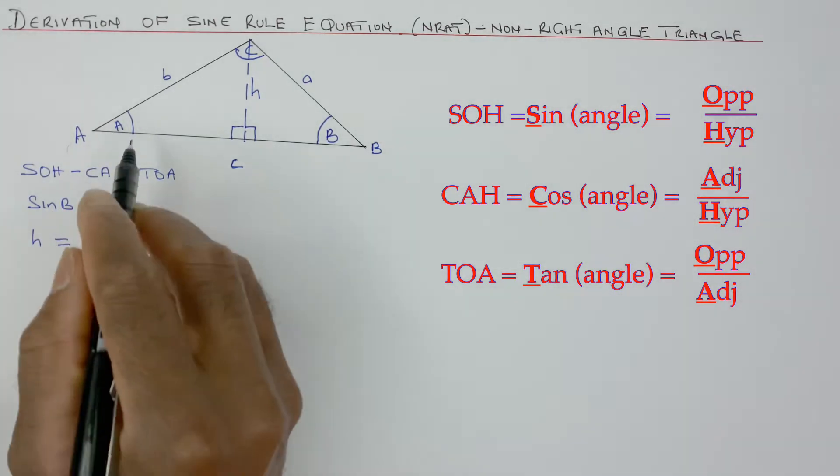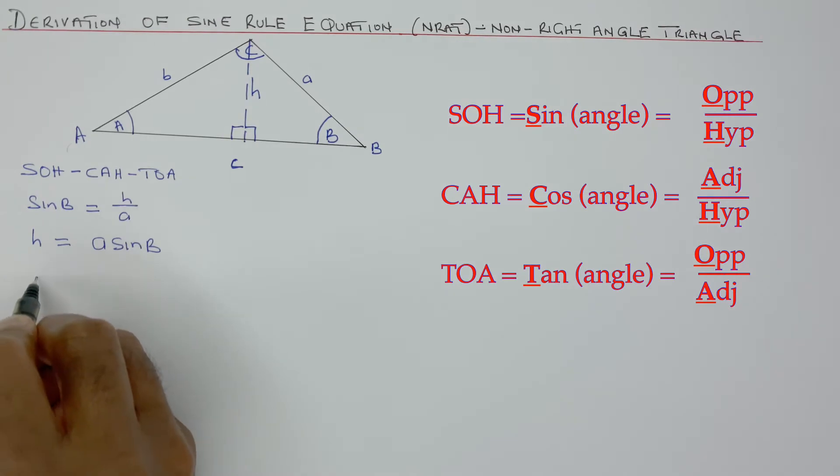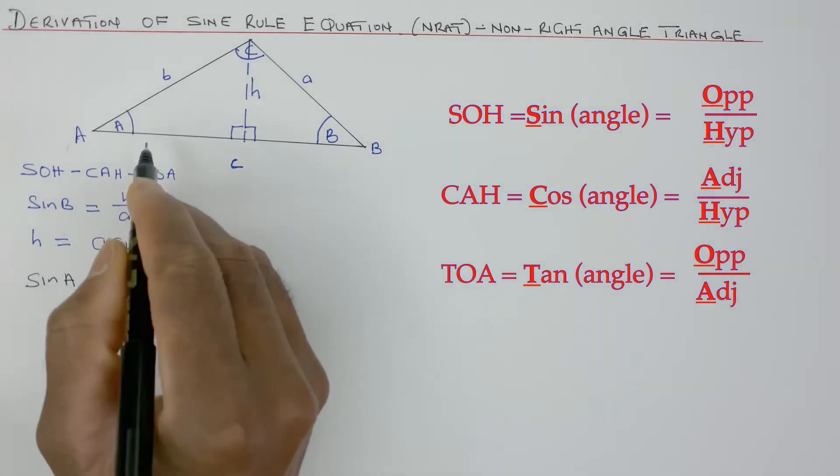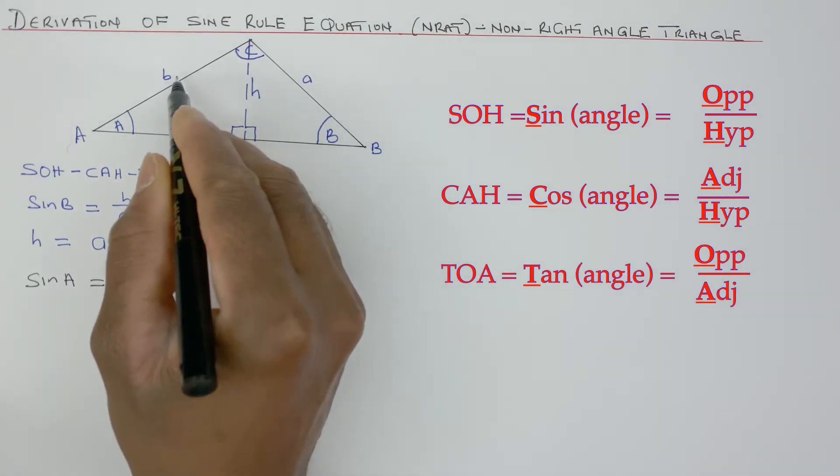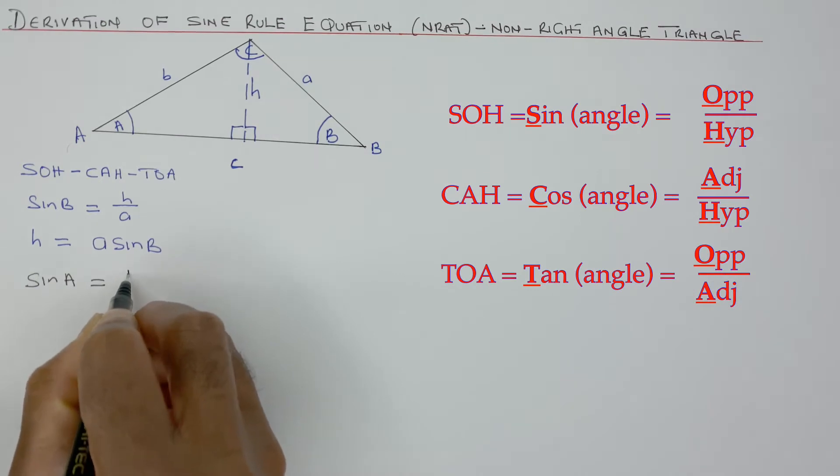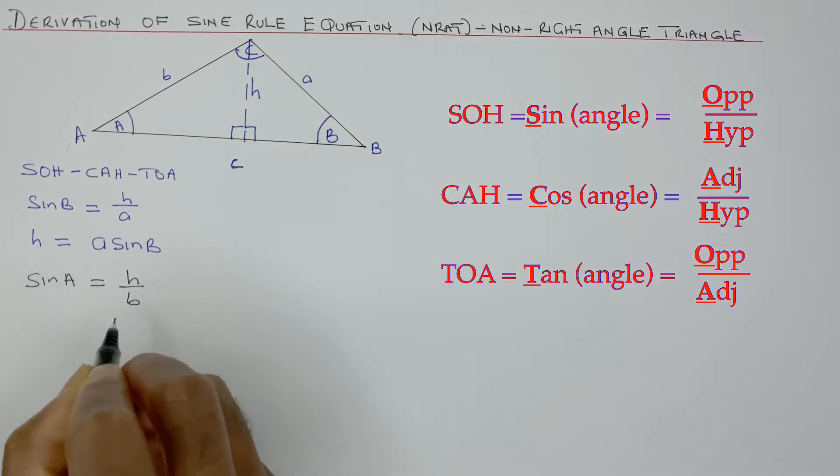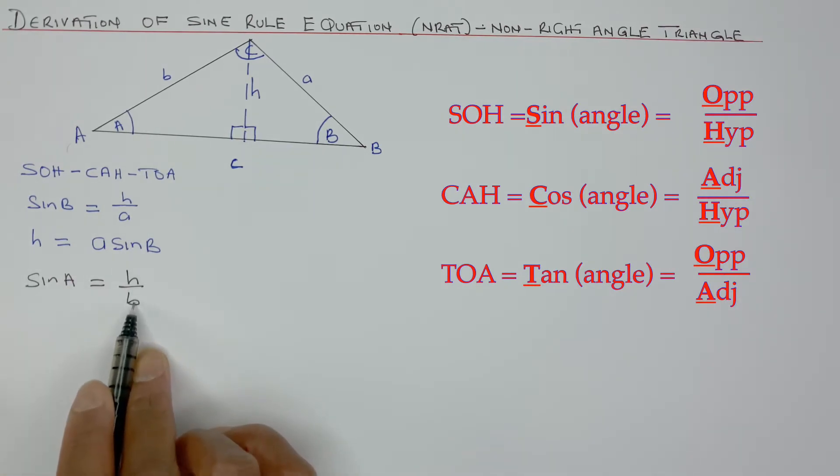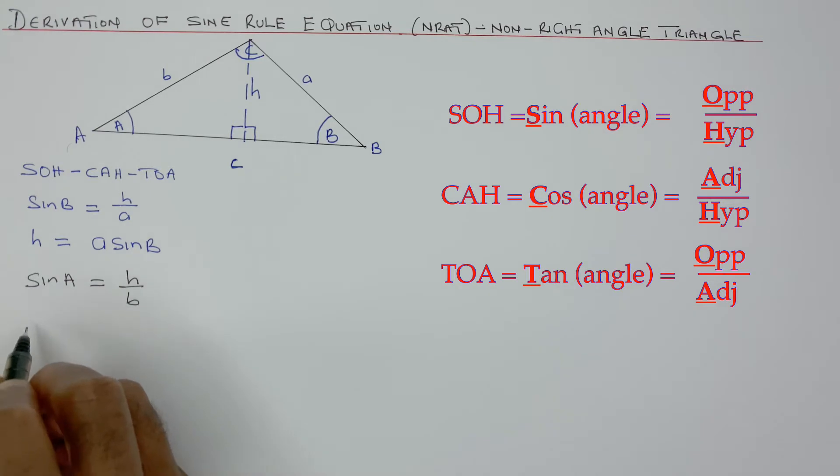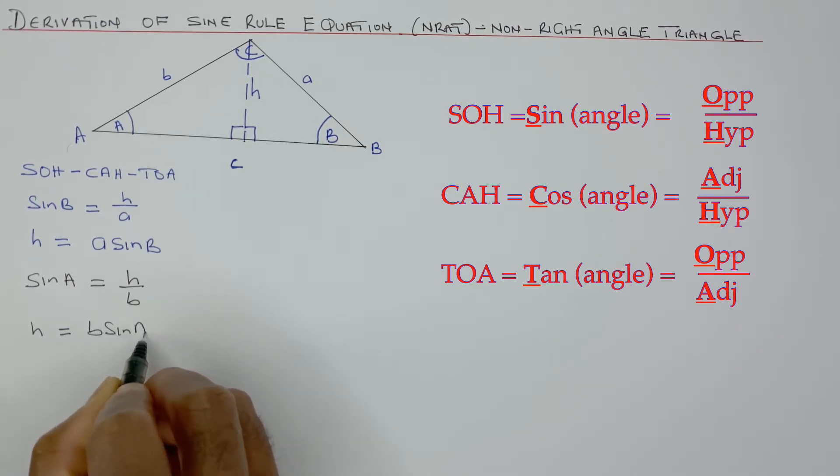Likewise, I could find the angle A. For the angle A, I could do sine of angle A equals opposite, which is also H here, over hypotenuse, which is B. So that would be H over B. At the same time, I could multiply both sides by B to cancel that B out. So I can get H equals B sine of A.